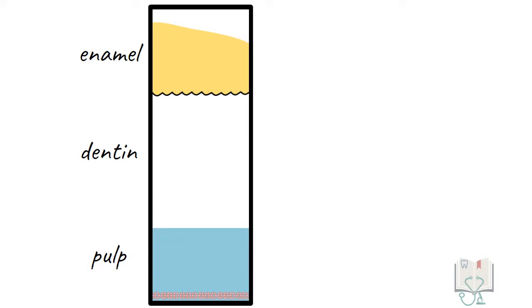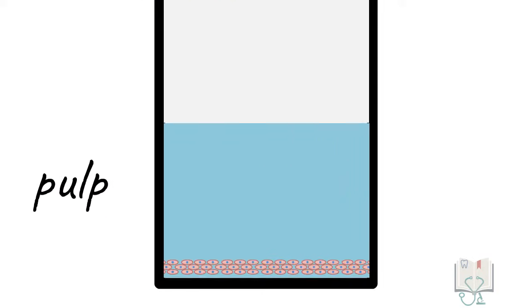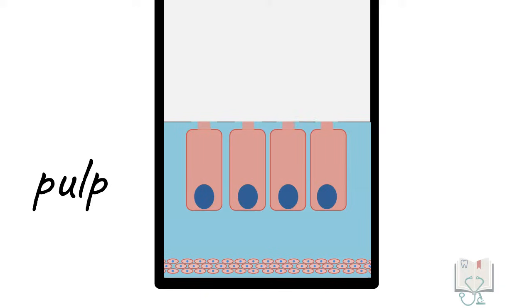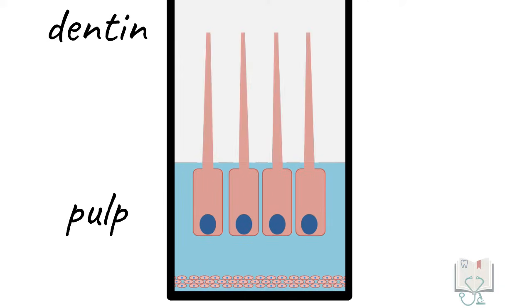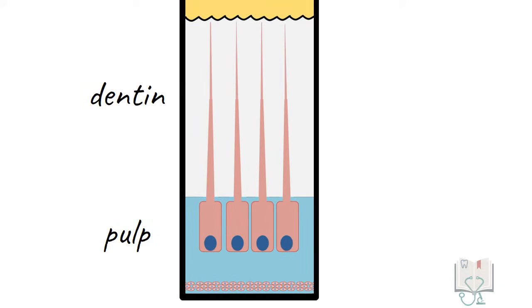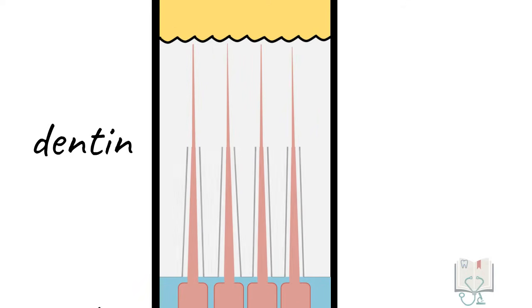Now, dentin is a complicated tissue. It is completely mineralized. Odontoblasts are present in the pulp, but their cytoplasmic extensions called odontoblastic processes run through the entire thickness of dentin in a hollow canal called dentinal tubule.